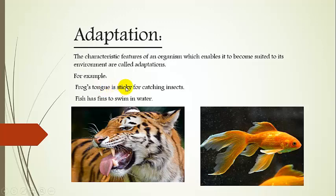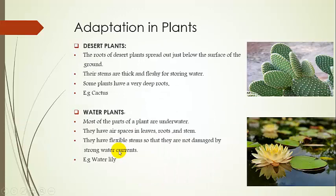For example, a frog's tongue is adapted to become sticky for catching insects. In a similar way, fish has fins to swim in water. As you see here, the tiger has a specialty for chewing flesh and crushing bones. These all are adaptations in animals.